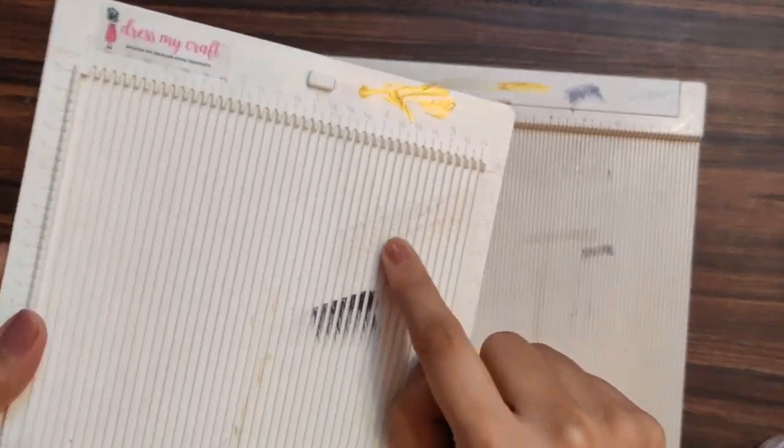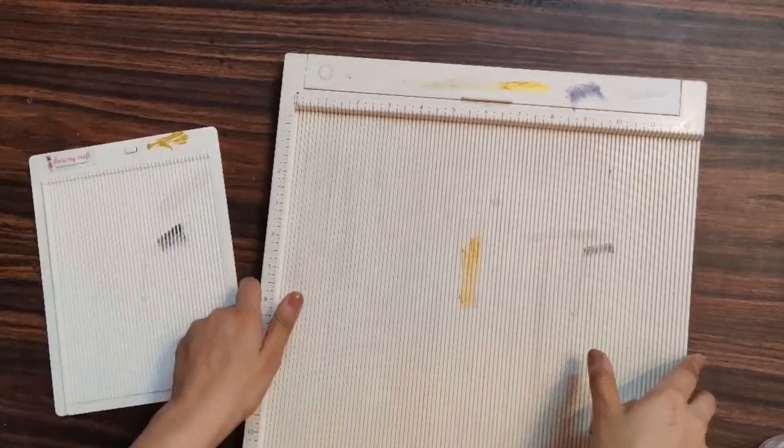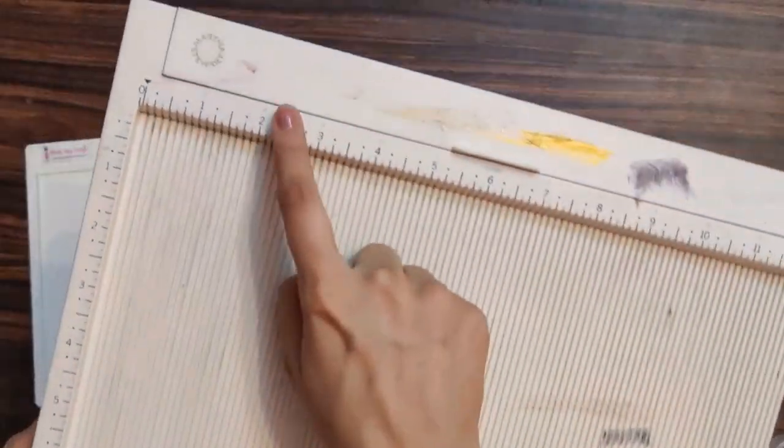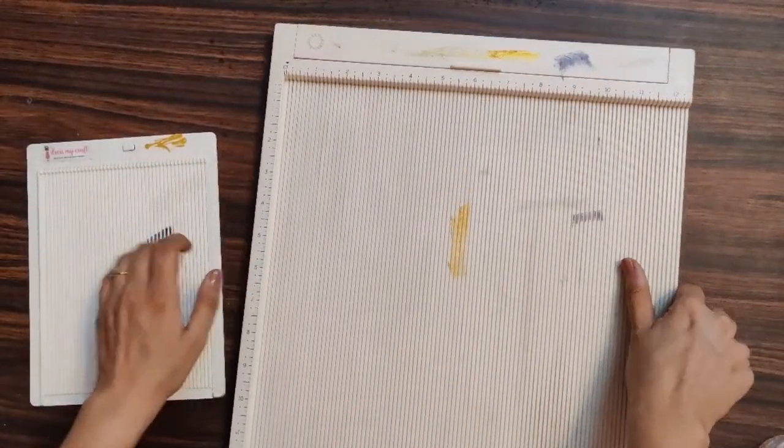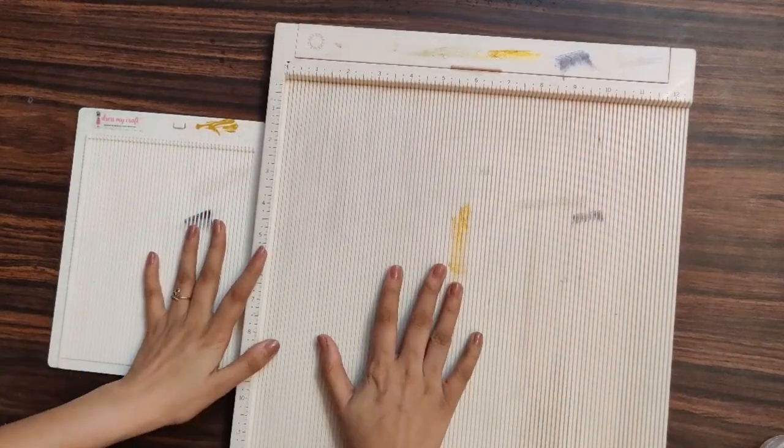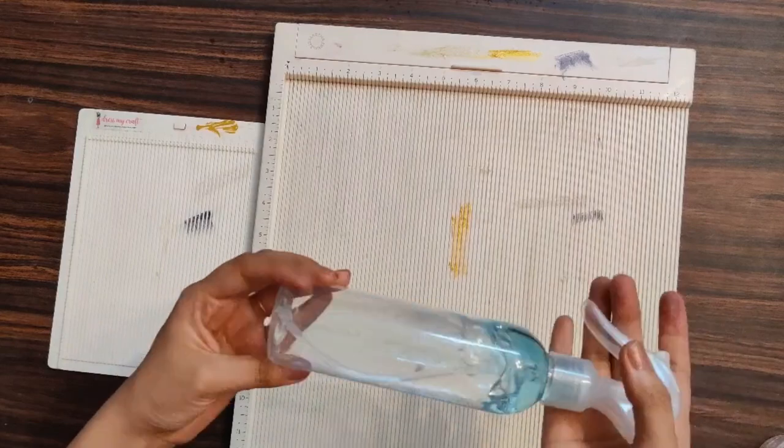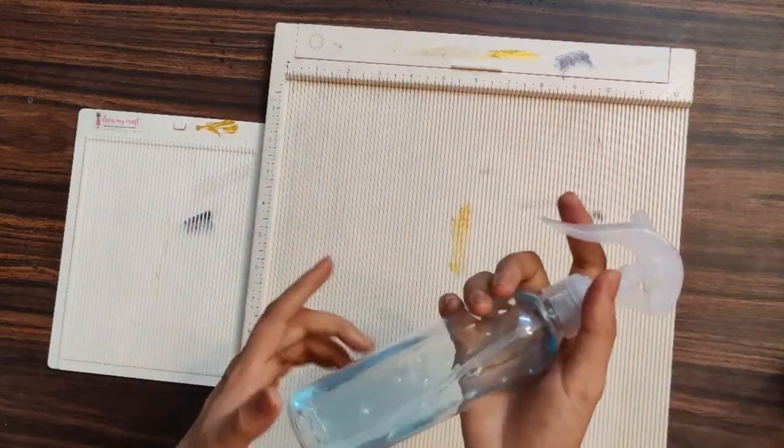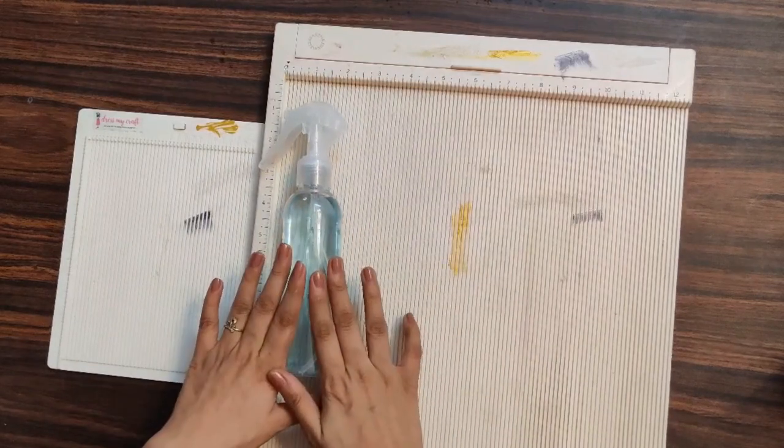So now you will ask me, Kanika, how to remove these marks? The answer is very simple. If you want to get rid of all these dirty marks, all you need to do is take another spray bottle and onto that I have added a secret ingredient which looks like this. You know what the secret ingredient is? This is nothing but a simple liquid hand sanitizer.